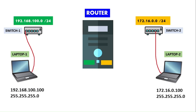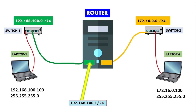For this router we will require two network interface cards (NICs). One NIC will be connected to Switch One on the Laptop One side, and the other NIC connected to Switch Two on the Laptop Two side. We will assign a static IP of 192.168.100.1 on the Laptop One side and 172.16.0.1 on the Laptop Two side.